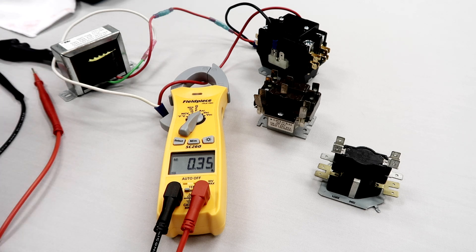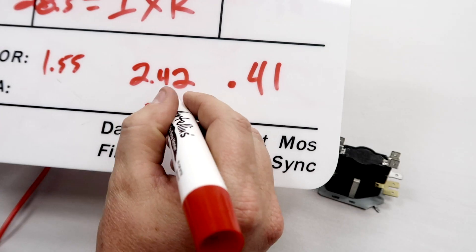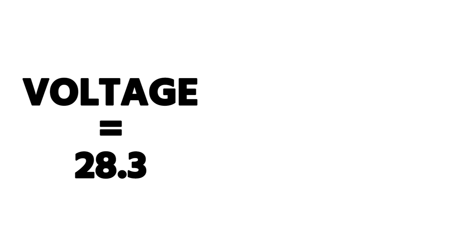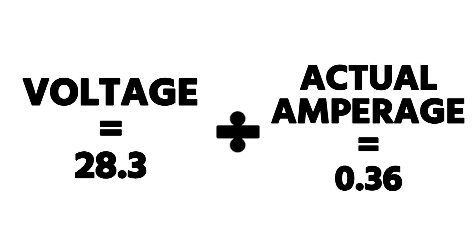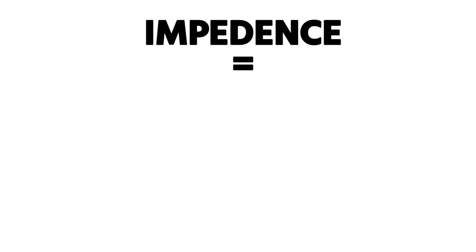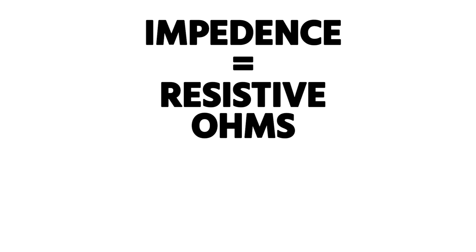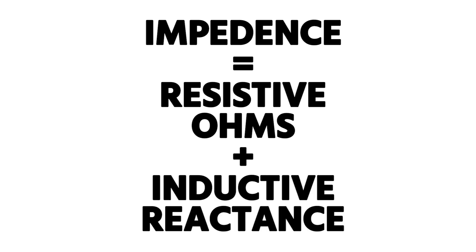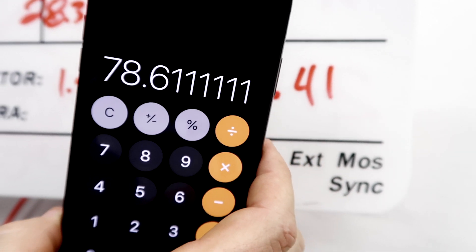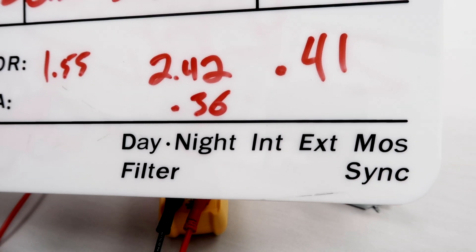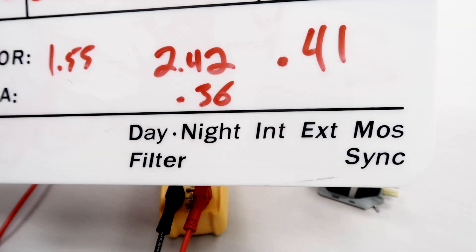I can actually tell you what the total circuit impedance is. If we know our voltage is 28.3 and our actual amperage is 0.36, then 28.3 divided by 0.36 gives us our true circuit ohms — and that would be the impedance. Impedance is the combination of resistive ohms you can measure with a meter while it's static, plus the inductive reactance that occurs within an electromagnet due to expanding and collapsing electrical fields. With an electromagnet you get this additional resistance that only shows up once you energize the load.